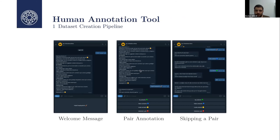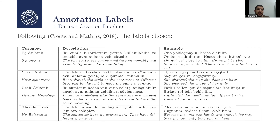The annotators were presented with four labels, inspired by the publication of Crudes and Matthias in 2018. The labels are: synonyms, near synonyms, distant meanings, or no relevance. Each pair was annotated by two annotators. If they agreed, we chose the label they agreed on. If they disagreed by a difference of one — for example, one said synonyms and another said near synonyms — we handled that case accordingly.